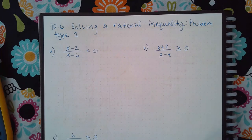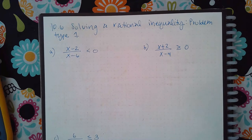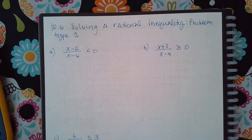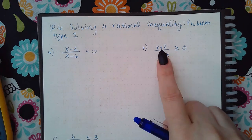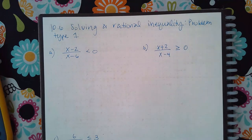Here we have solving irrational inequality problem type one. This is a lot like polynomials where you figure out what values you need to test. The key difference is that your denominator can never equal zero, so whatever x-values you get from your denominator will always be open circles. The bar symbol only applies to x-values from the numerator, not the denominator.